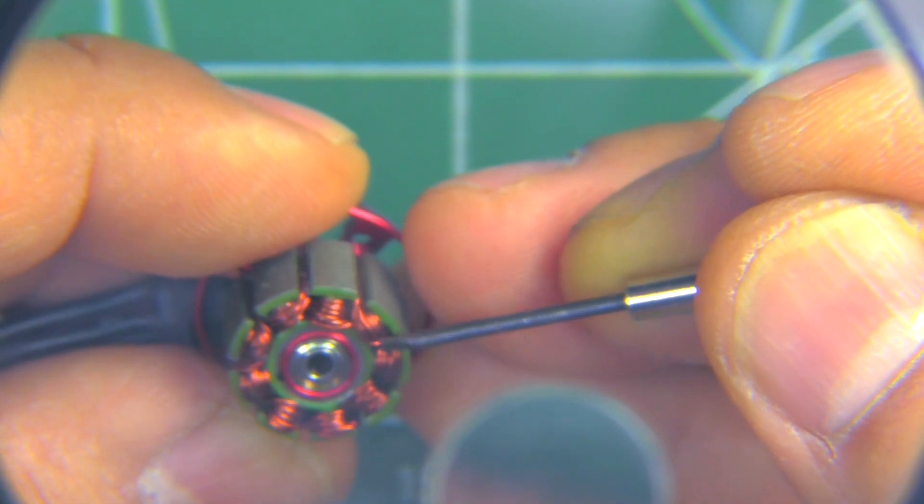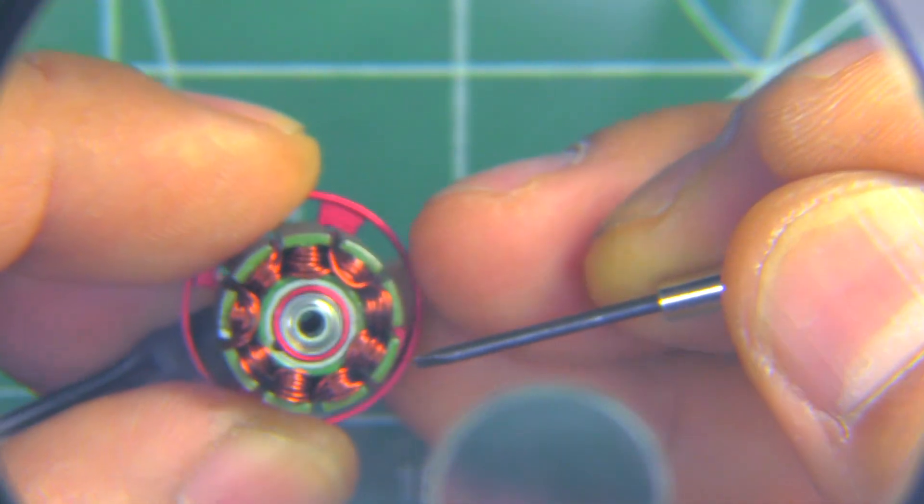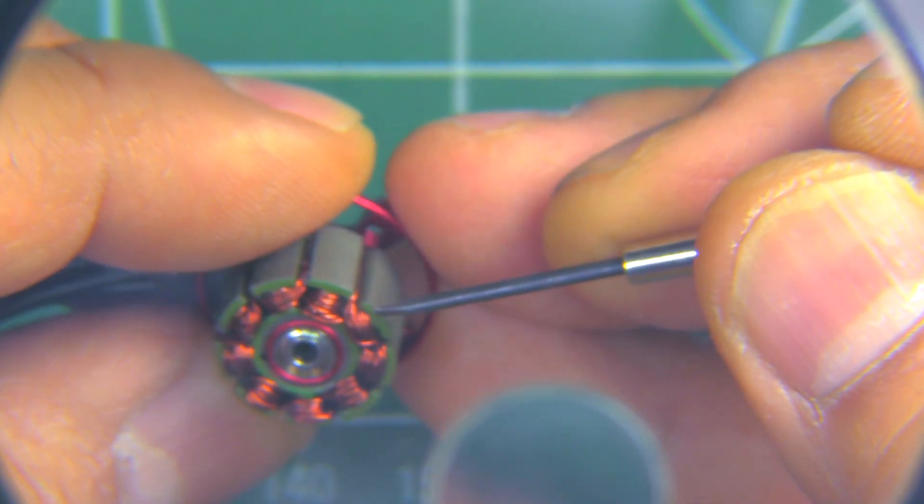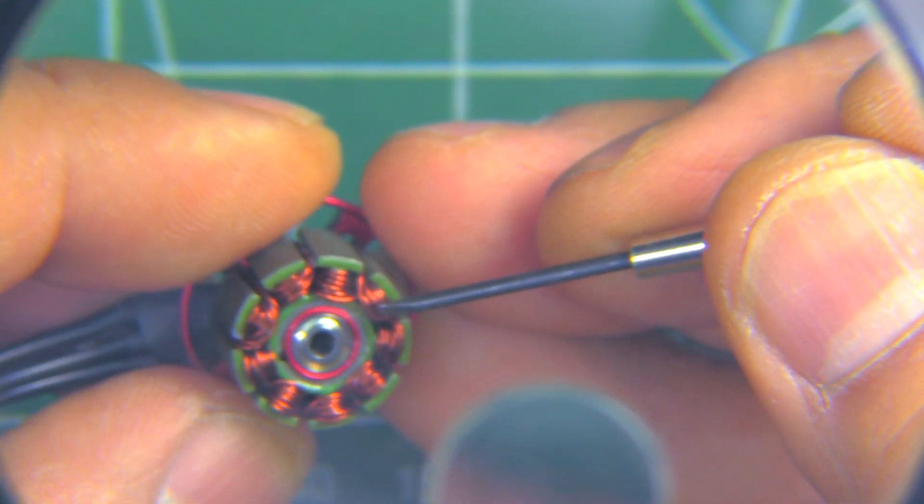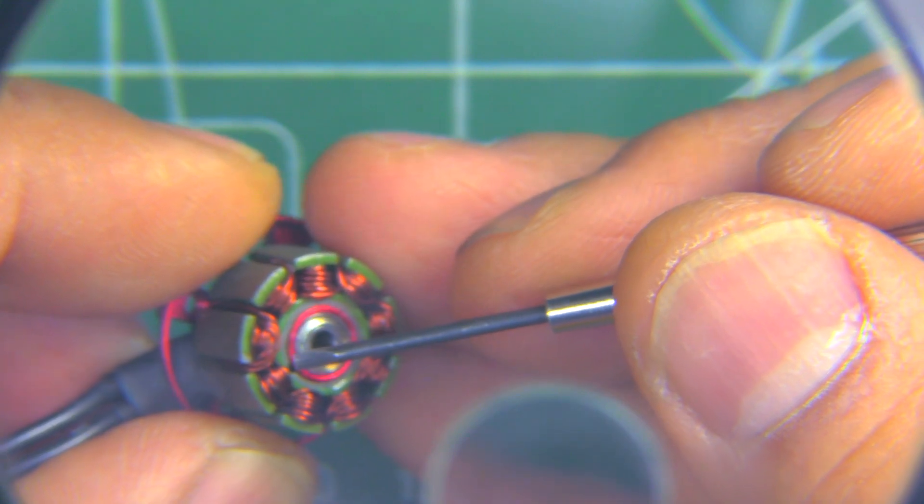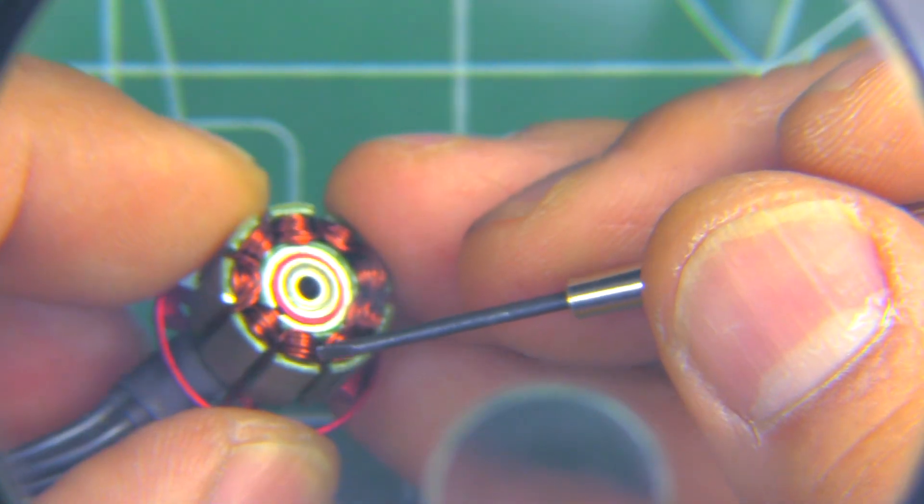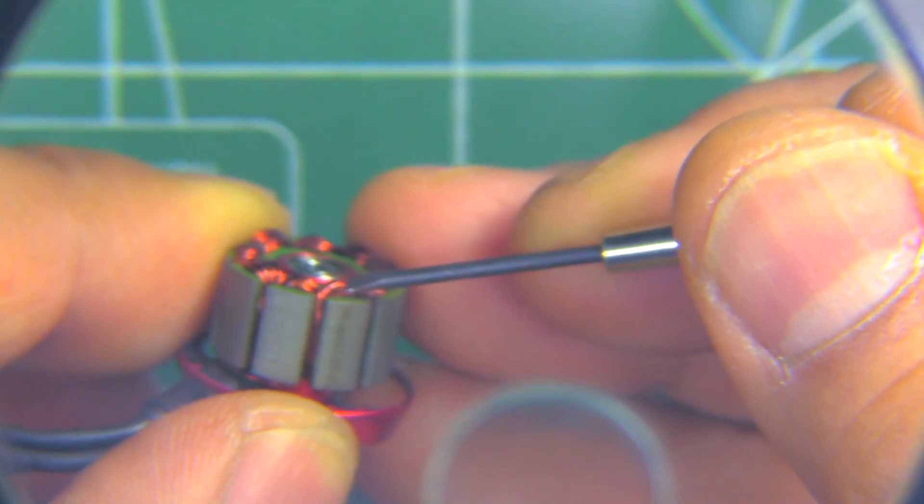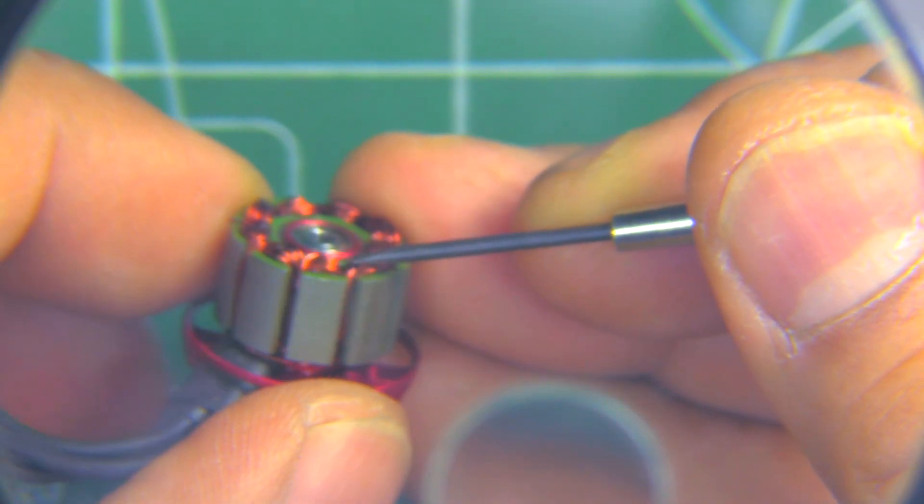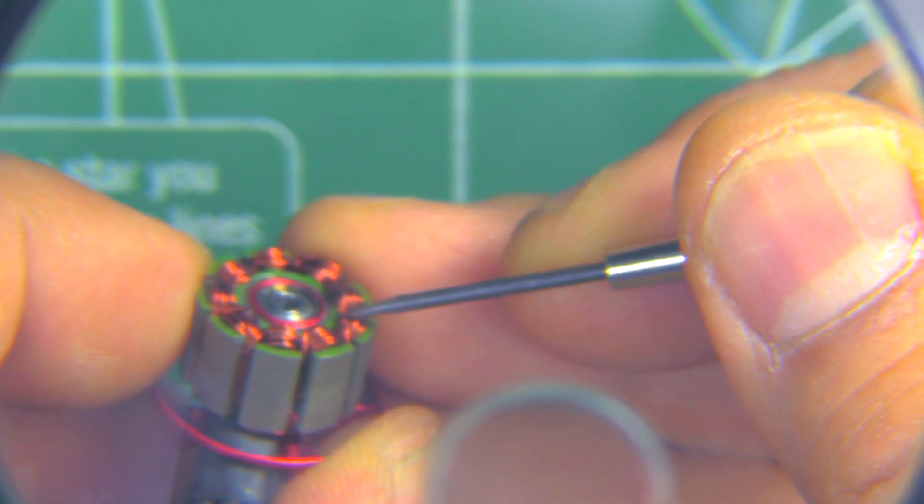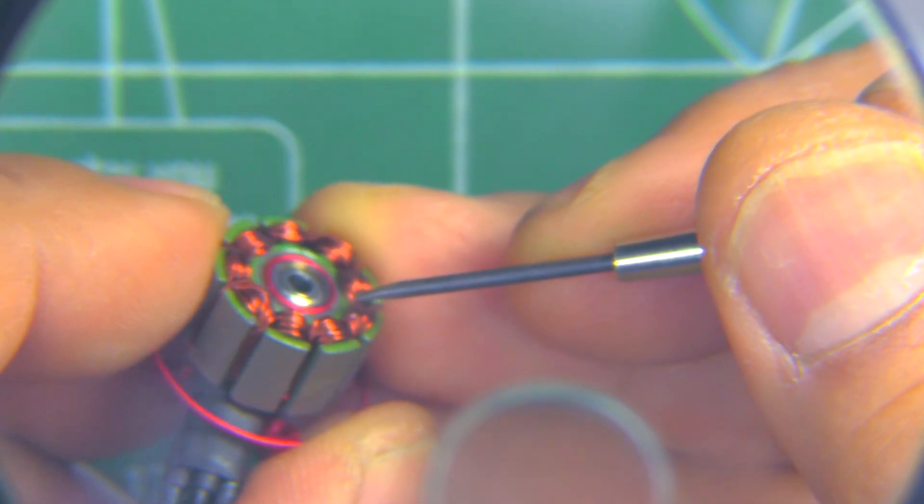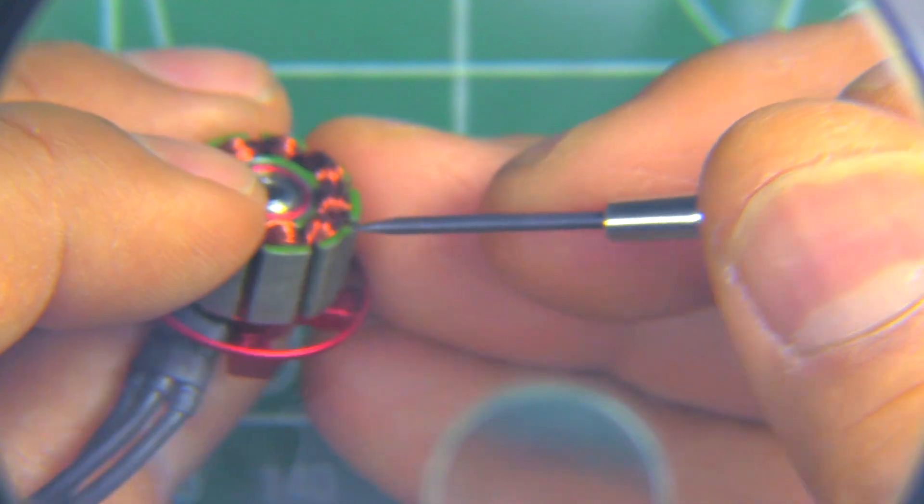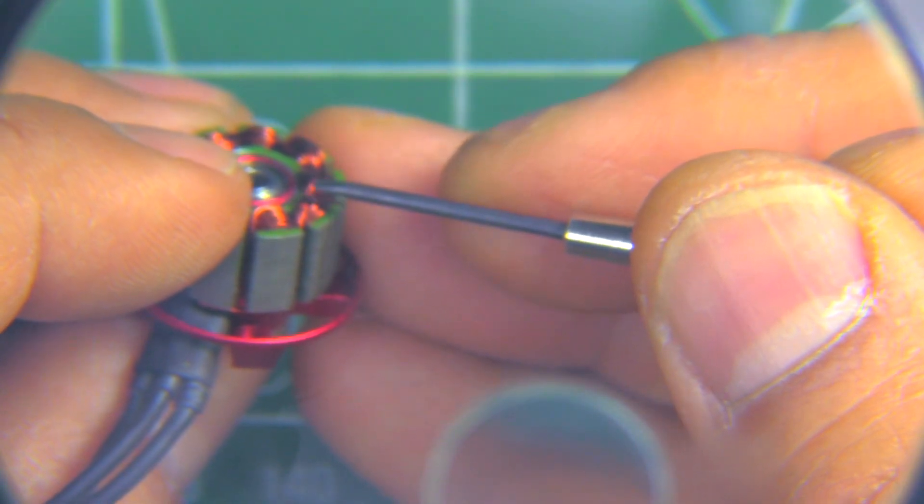But you do try to make sure that the wires don't bulge out too much, like here, because these are like null areas, there's no electromagnetic force produced here at what they call the top of the turn and the bottom of the turn. So you try to make it as closely packed as you can, right here.